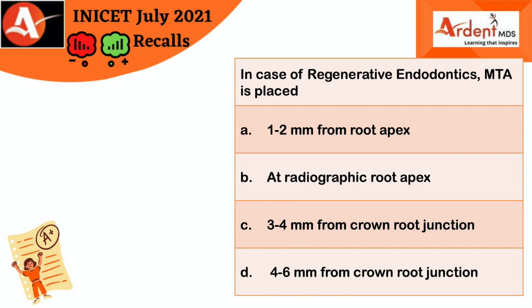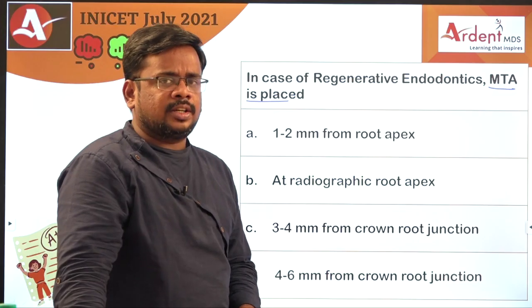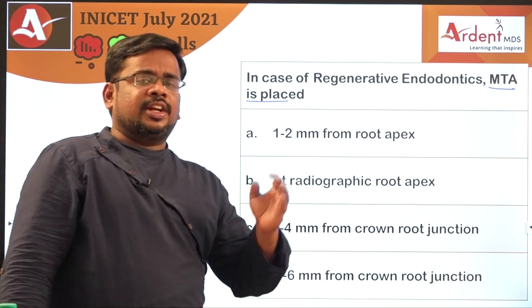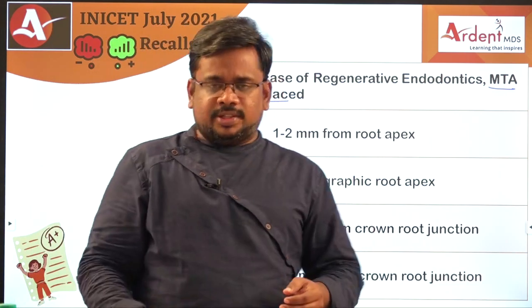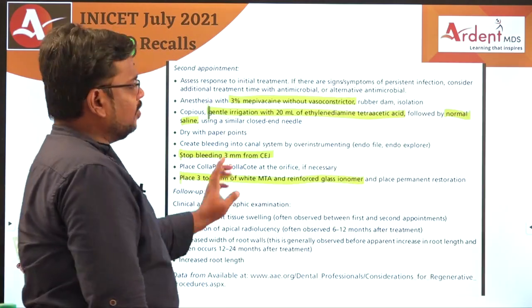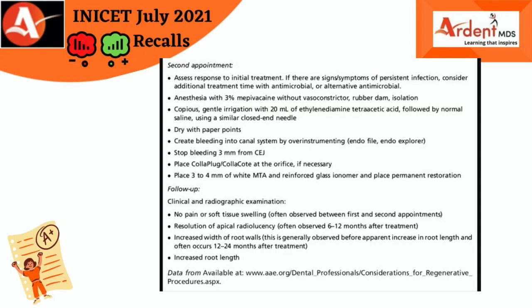The second question is from the same topic. In case of regenerative endodontics, MTA is placed 1 to 2 millimeters from the root apex, 3 to 4 millimeters, 4 to 6 millimeters from the crown-root junction, or at the radiographic root apex? The regenerative endodontic procedure is done in two appointment stages, as per the American Association of Endodontics protocol. In the first appointment, sodium hypochlorite irrigation is used to remove debris from the root canal.